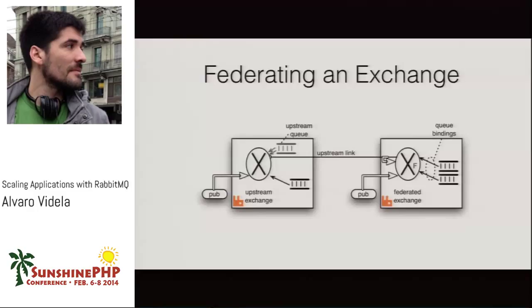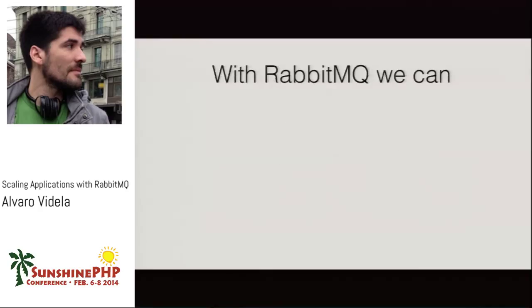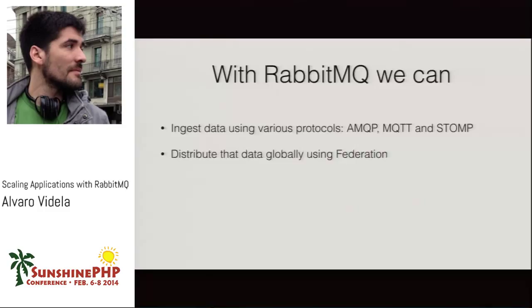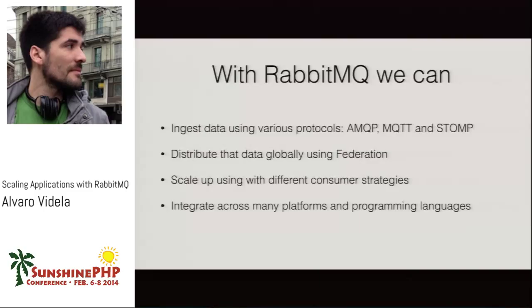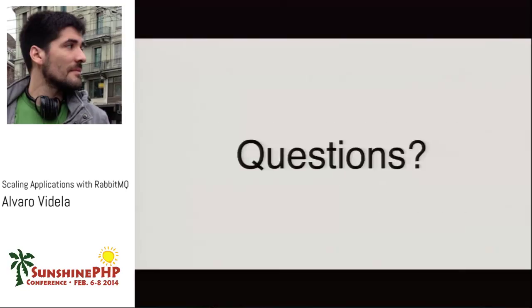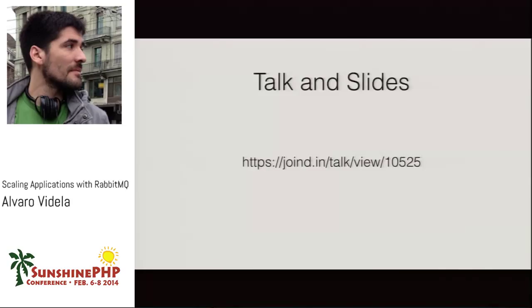To wrap up — yes, you can mix protocols between consumers and producers. With RabbitMQ you can receive data using various protocols — AMQP, MQTT, STOMP, HTTP, XMPP — distribute data globally using federation, scale using different consumer strategies with many consumers on one queue or many queues depending on your exchange topology, and integrate across many platforms and programming languages. Please rate the talk on Joind.in and you can find the link to the slides there. Thanks!